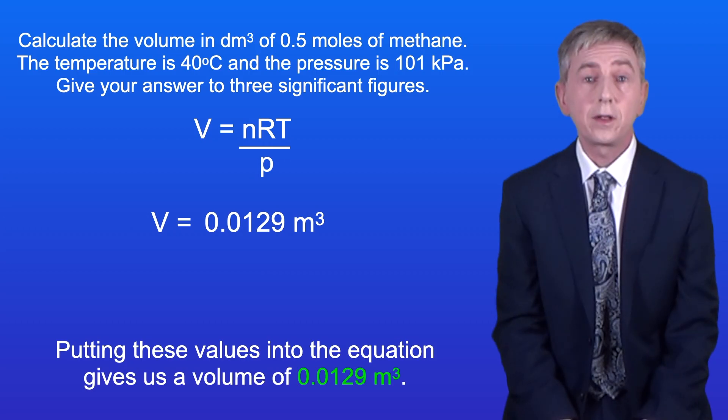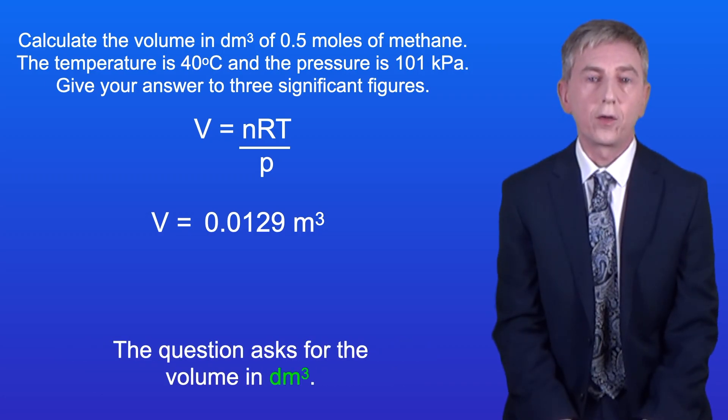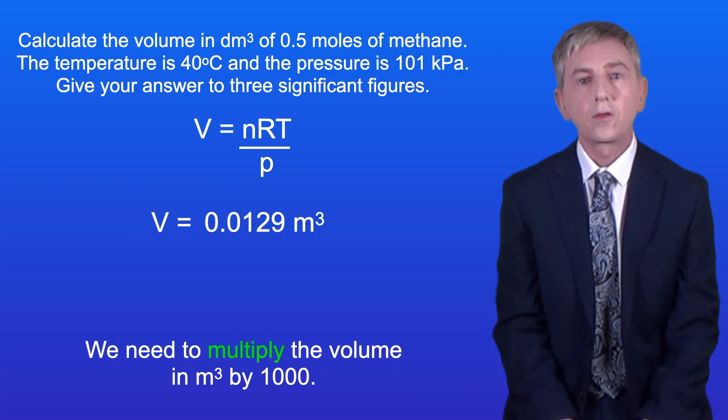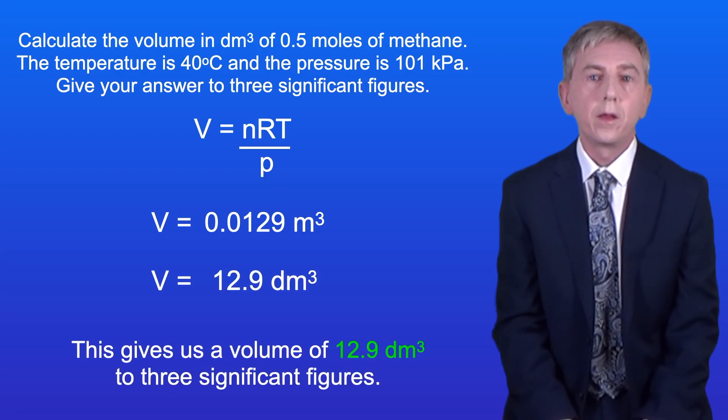Putting these values into the equation gives us a volume of 0.0129 m³. Now the question asks for the volume in dm³ so we need to multiply the volume in m³ by 1000. This gives us a volume of 12.9 dm³ to three significant figures.